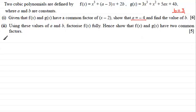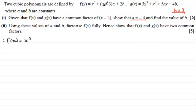Let's put down what f(x) would be if we substitute our values of a equals minus 4 and b equals 3 into it. What we'd have is x cubed, then minus 4 minus 3 which is minus 7, times x, so minus 7x. And then plus 2b — well b was 3 — so that's plus 6.